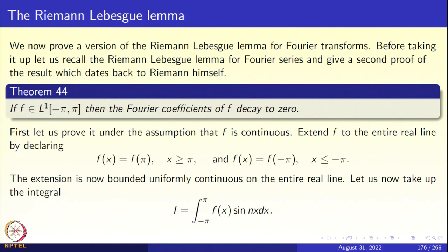We shall give a similar argument for the Fourier transform: if f is in L1(R), its Fourier transform decays to 0 as χ → ±∞. We shall also prove continuity of the Fourier transform, which together tells us that the Fourier transform of an L1 function lands in a very small subspace of L∞. With this we close the capsule. Thank you very much.